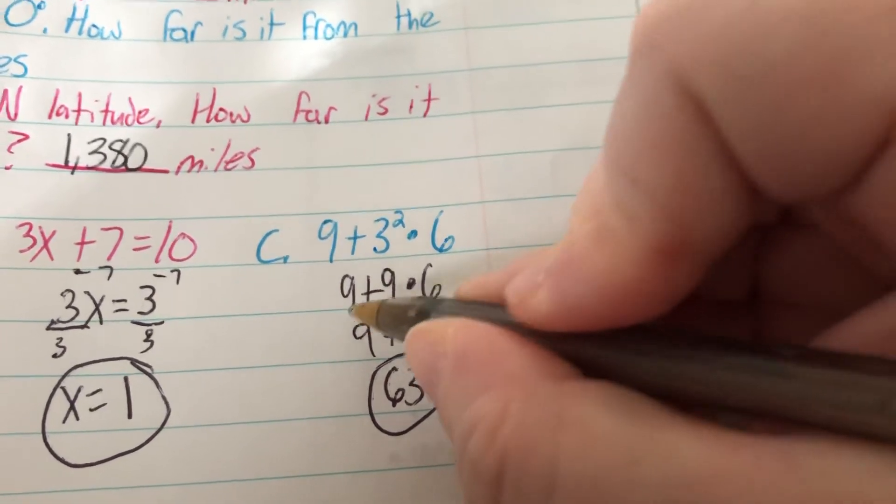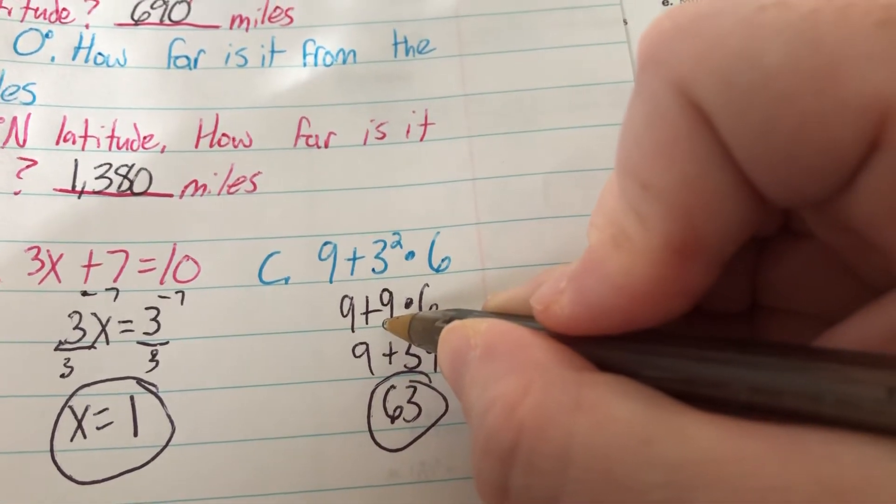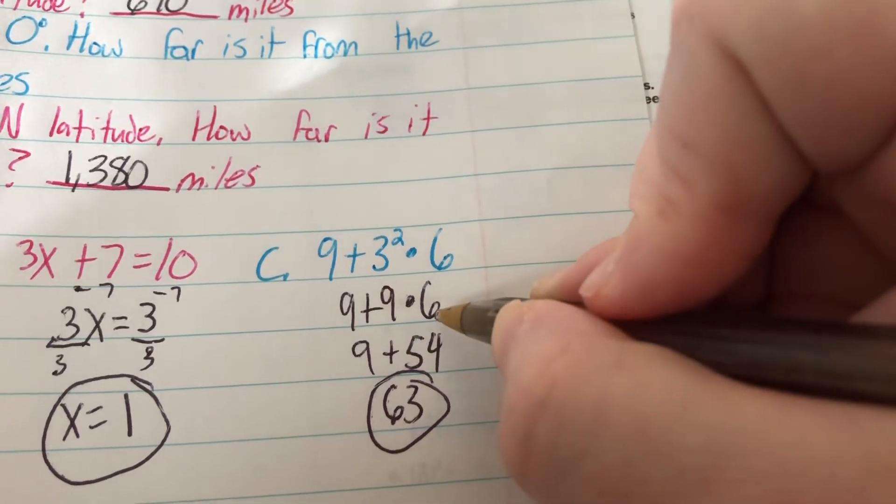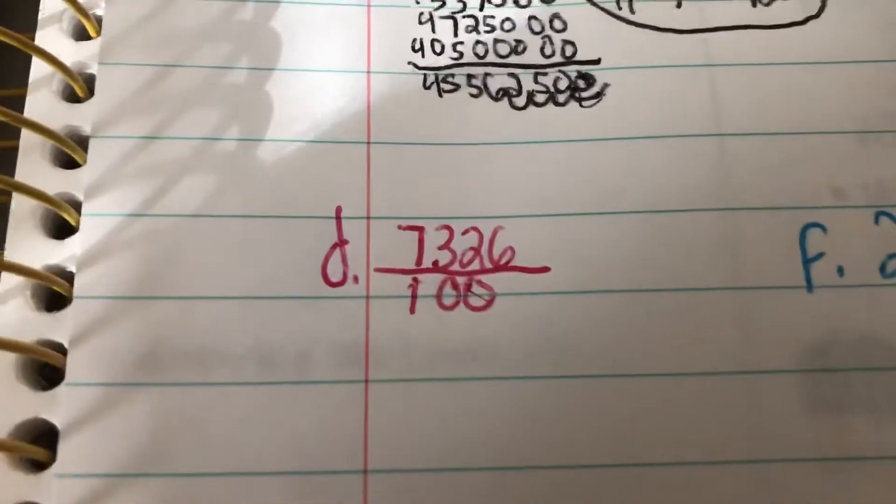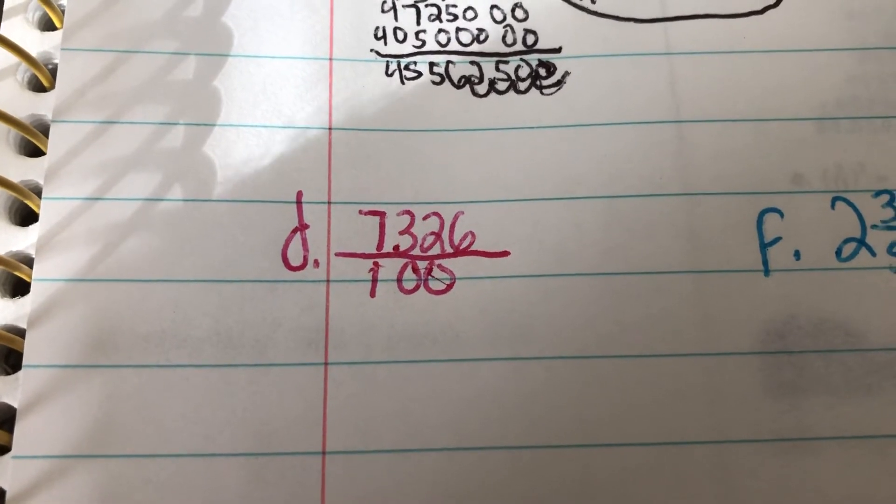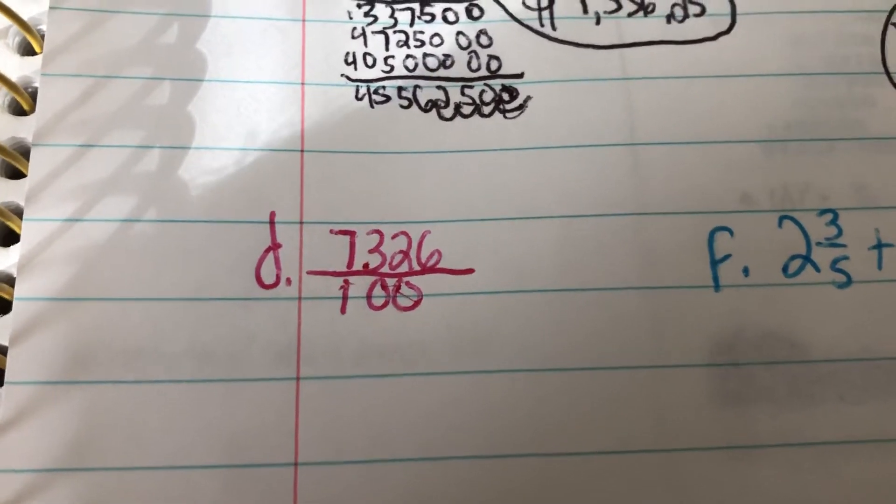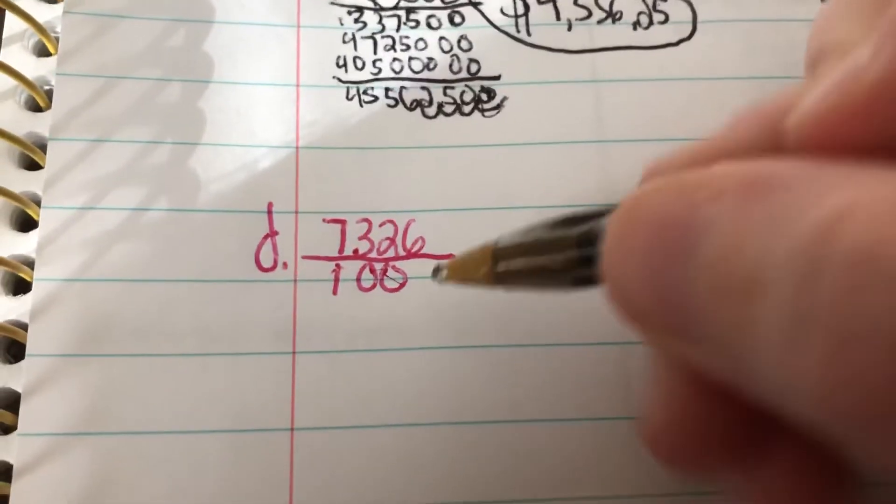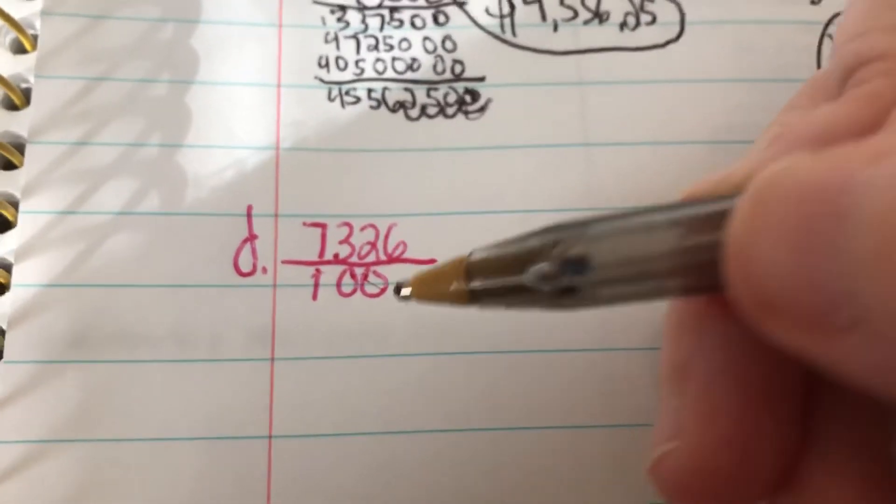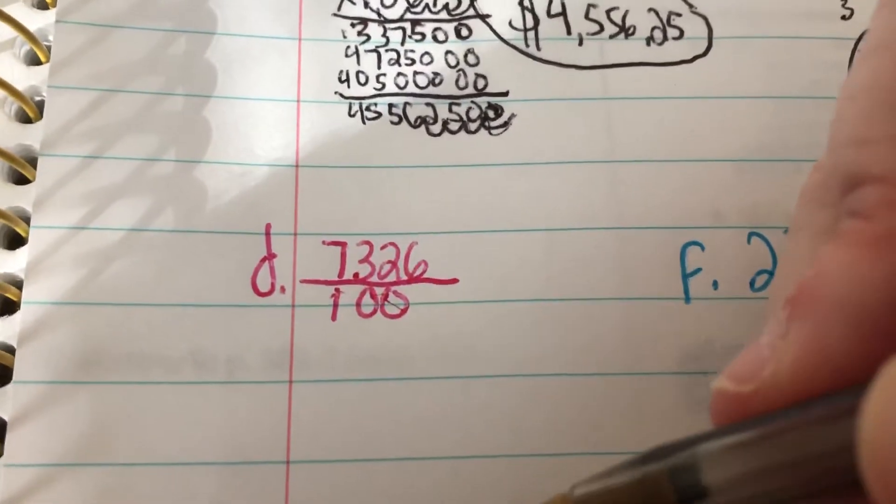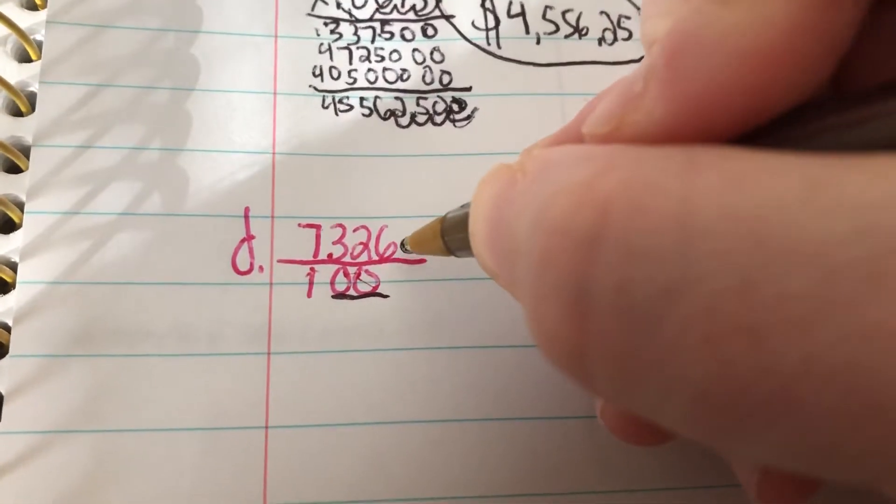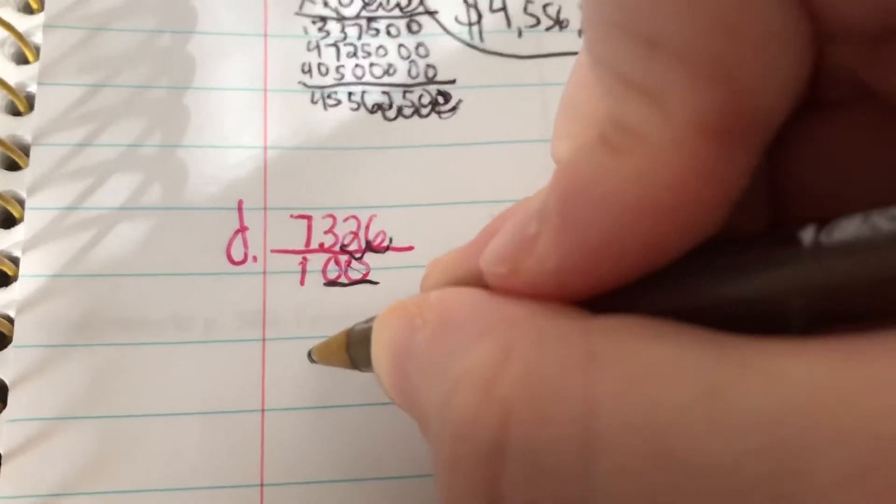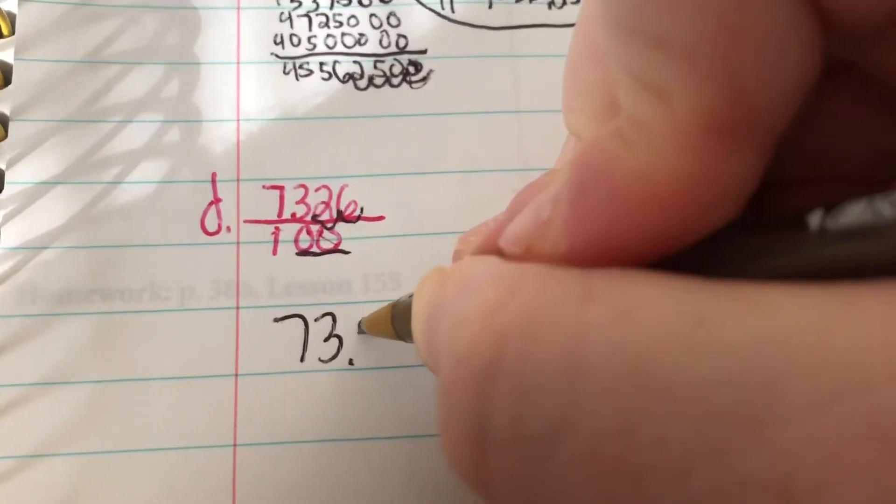If we had done the 9 plus 9 first, then it would be 18 times 6, which would be way too large of an answer. Now for D, we have 7,326 divided by 100. Any time that we have a number divided by a power of 10, 10, 100, 1,000, so on, we can just move that decimal point over that many times. So we have 2 zeros, so move your decimal over twice. So your answer would be 73.26.